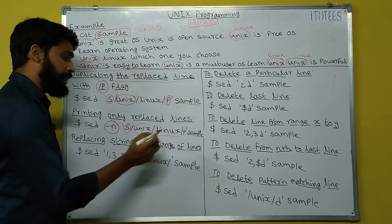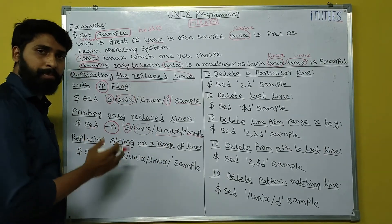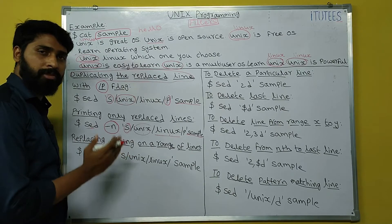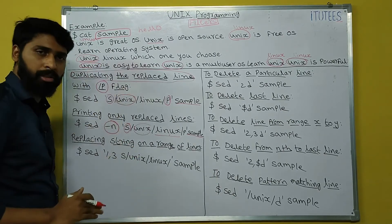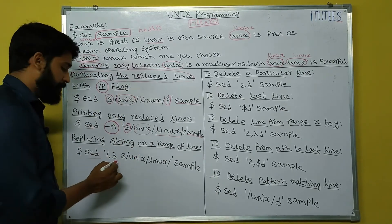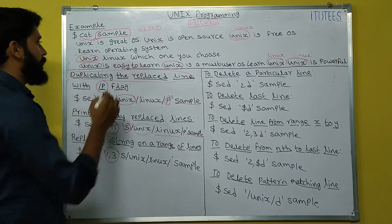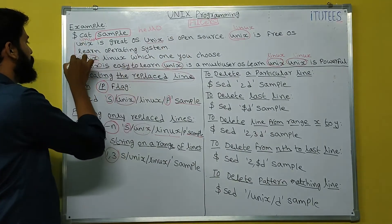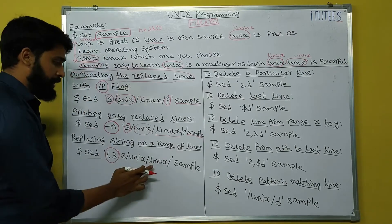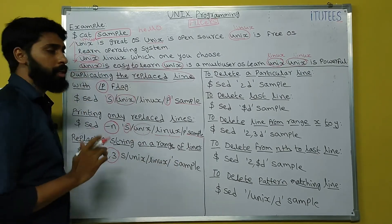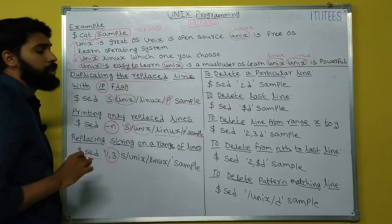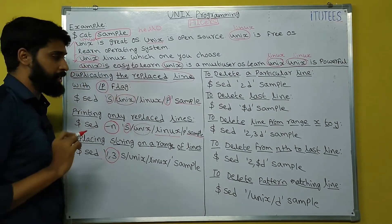Replacing the string on a range of lines: to substitute unix with linux from line 1 to line 3 only, use: SED '1,3s/unix/linux/' sample. The line numbers 1 and 3 define the range. Only the first occurrence in lines 1, 2, and 3 will have unix changed to linux.